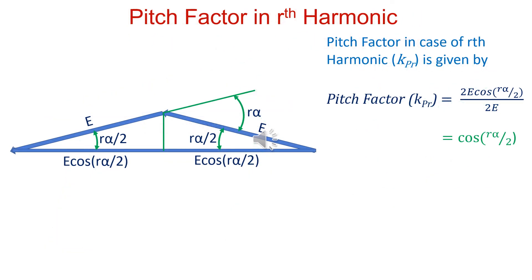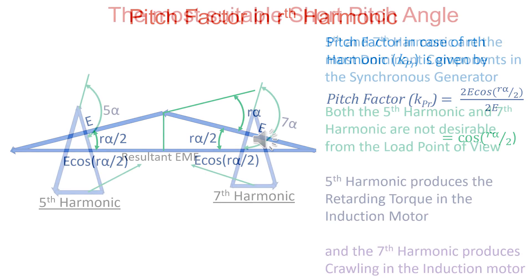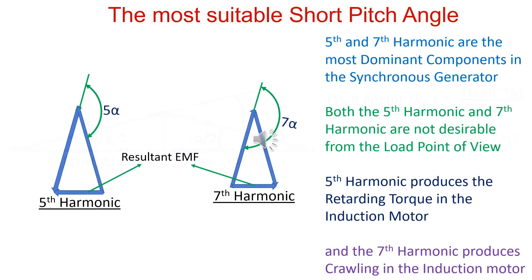Pitch factor in case of Rth harmonic is cos r alpha by 2. In practical machines, even harmonics are absent. In star-connected stator winding, triplen harmonics are also absent. Higher harmonics are of less magnitude. Hence, let us concentrate on fifth and seventh harmonics.